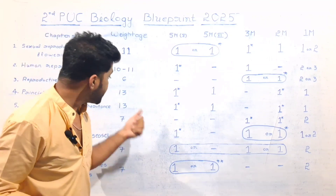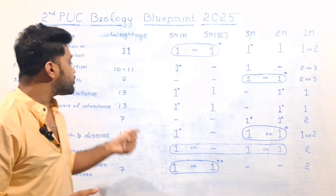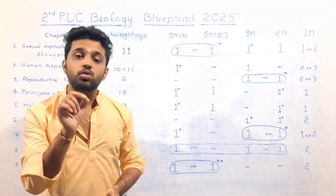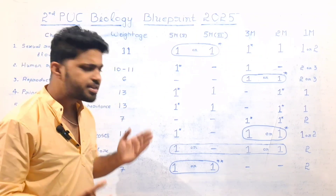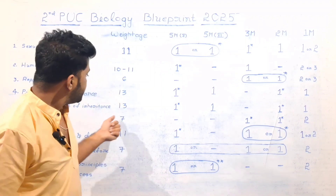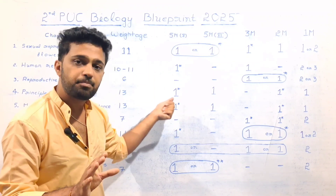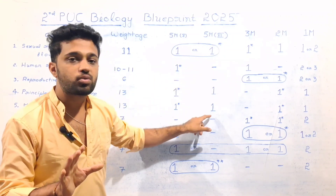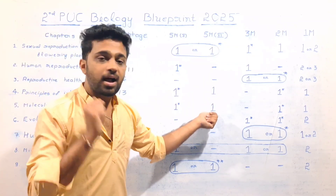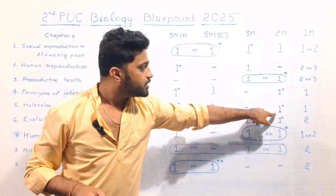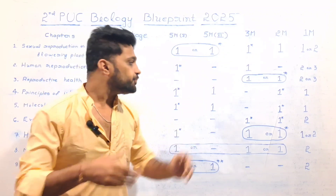The next very important chapter is also the highest weightage — Molecular Basis of Inheritance, worth 13 marks. This is the highest weightage chapter of inheritance. There are 2-mark questions in this chapter, and it is higher weightage.